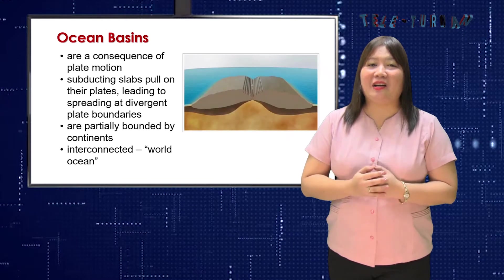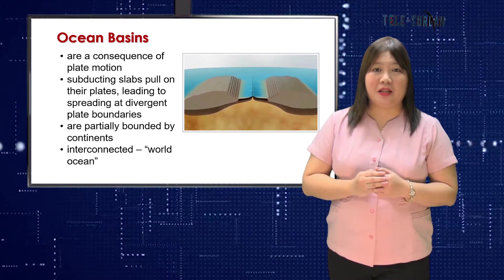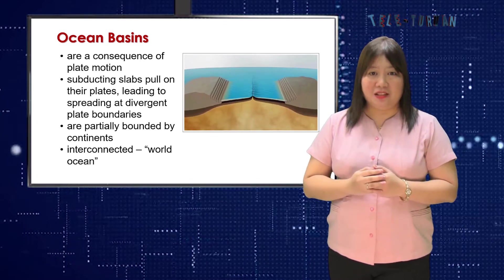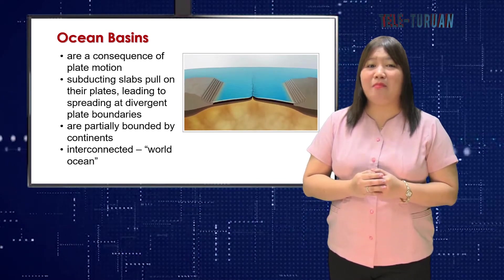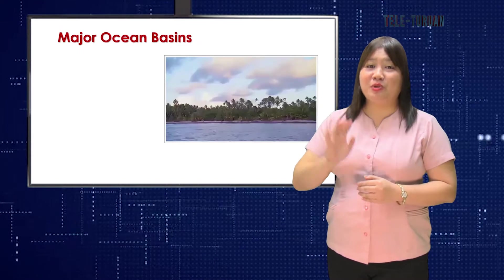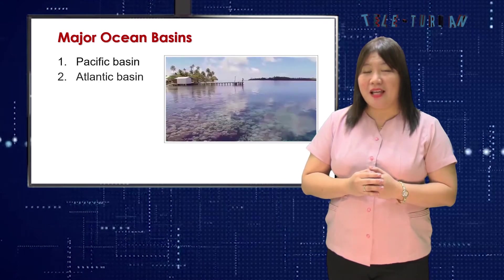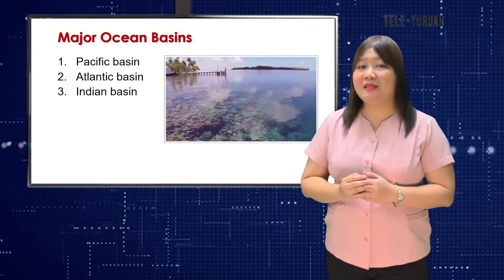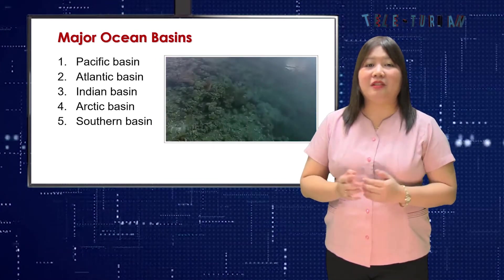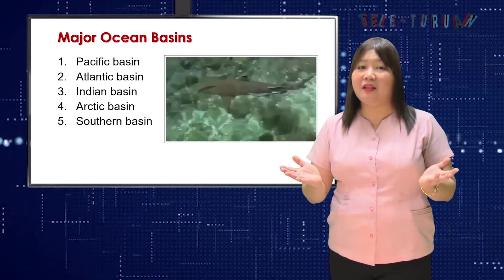Ocean basins are a consequence of plate motion. Subducting slabs pull on their plates, leading to spreading at divergent plate boundaries. The ocean basins are partially bounded by the continents, but they are interconnected, which is why marine scientists refer to a single world ocean. There are five major ocean basins coordinating with the major oceans of the world: the Pacific Basin, the Atlantic Basin, the Indian Basin, the Arctic Basin, and the Southern Basin. Many smaller basins are often considered oceanic basins, such as the North Aleutian Basin between the Pacific and Arctic Oceans.